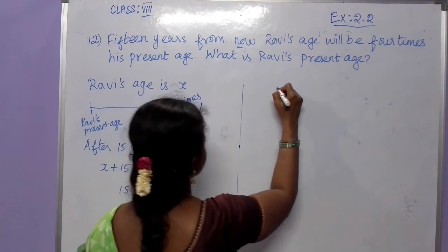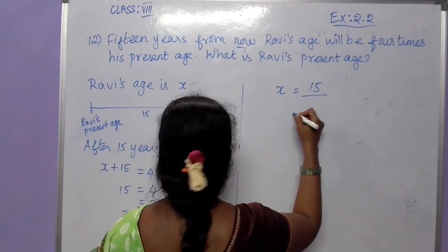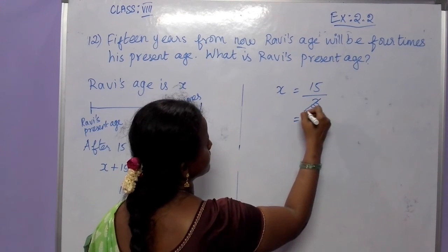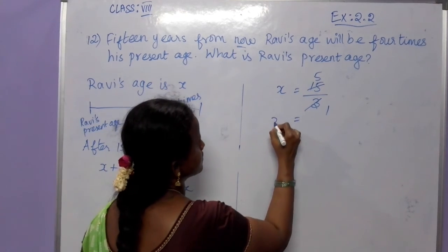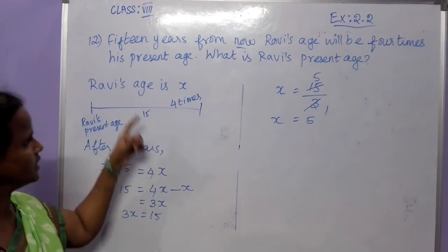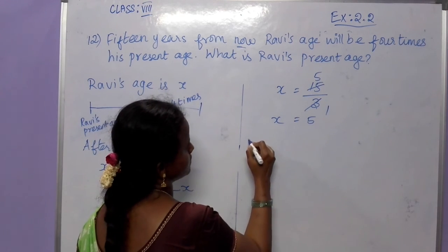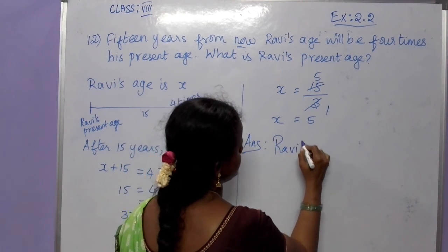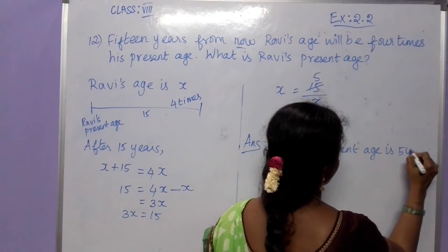What is the value of x? 3x equals 15, so divide by 3. Cancel — x is equal to 5. The x here is Ravi's present age. Ravi's present age is 5 years.